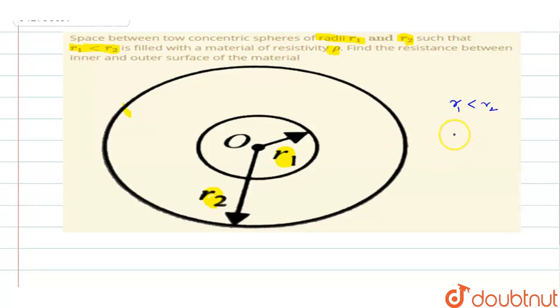Now, from the resistance equation that is R equals rho L by A, from this equation, in this case, the length of the resistance here, L, is nothing but R.